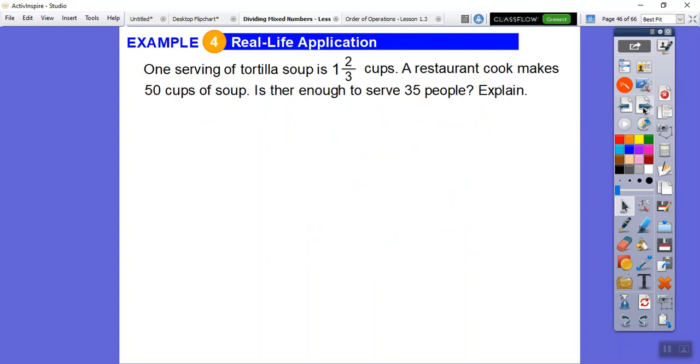I think we have a real life application here. It's the same stuff, just putting it into a word problem. This lesson is dividing mixed numbers. One serving of tortilla soup is 1 and 2 thirds cups. A restaurant cook makes 50 cups of this soup. So there's 50 cups of soup in there. And if one serving is 1 and 2 thirds cup, will the 50 cups be enough to serve 35 people? Explain.